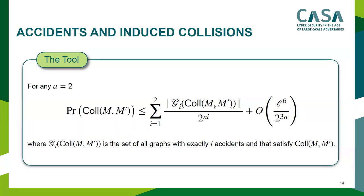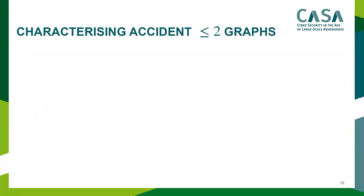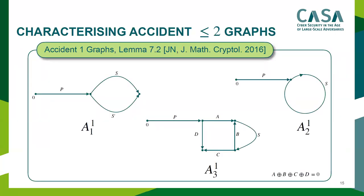Our main tool is bounding the set of all graphs with exactly i accidents that satisfy the collision event — a modified tool from our 2016 paper. You can fix an accident number a, bound the size of all graphs with exactly i accidents up to that number, and use a generic result for all other cases. For our case we need only a = 2, since once we reach two accidents the other term is already much smaller. We need to show that graphs with one accident are bounded by 1, and graphs with two accidents by l-squared.